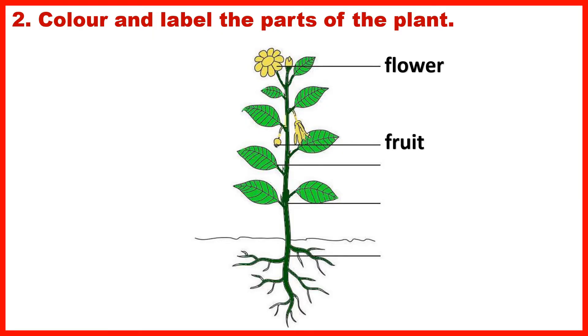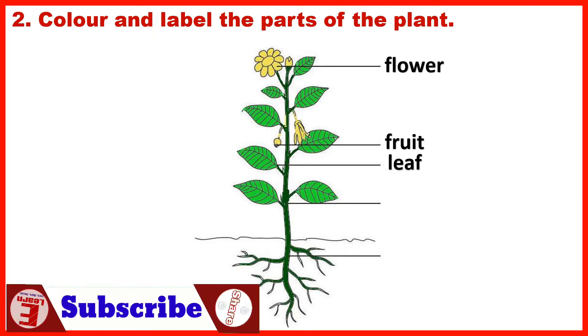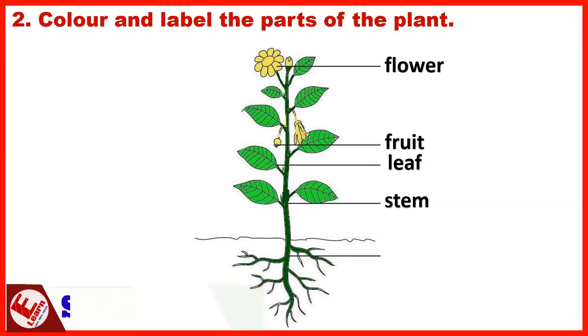The parts of the plant are: Flower, Fruit, Leaf, Stem, and Roots.